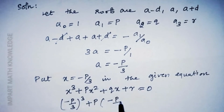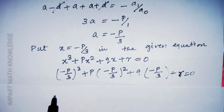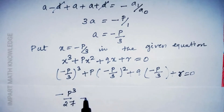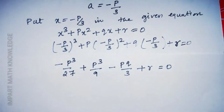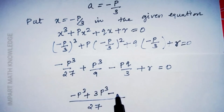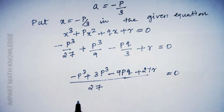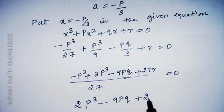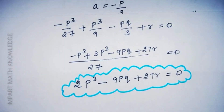Substituting x = -p/3 into x³ + px² + qx + r = 0: (-p/3)³ + p(-p/3)² + q(-p/3) + r = 0, which gives -p³/27 + p³/9 - pq/3 + r = 0. Taking LCM and simplifying: 2p³ - 9pq + 27r = 0. This is the required condition for the roots to be in arithmetic progression.